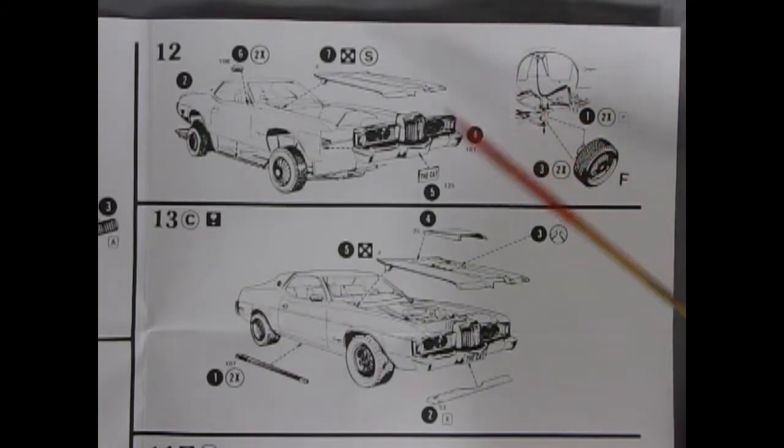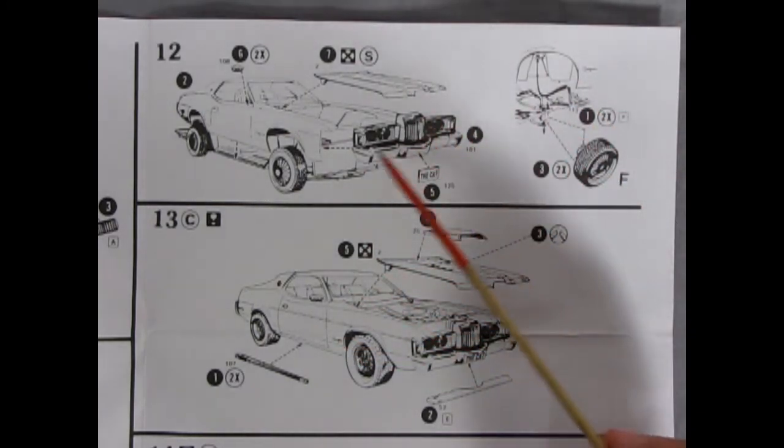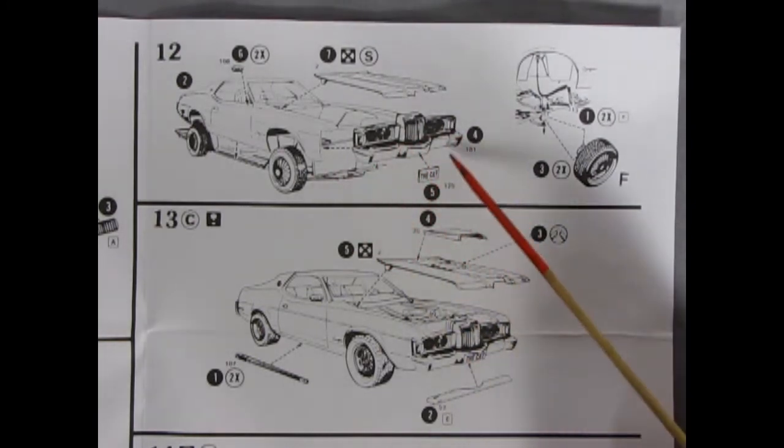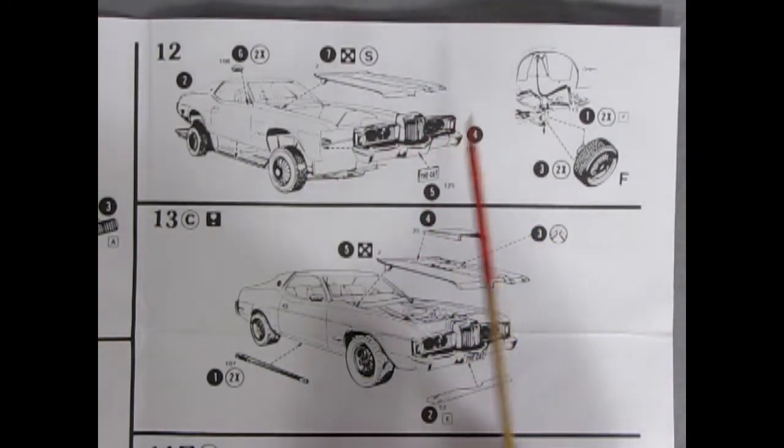Panels 12 and 13 can be shown together as one is a stock build and the other is a custom however they do share steps in between. As you can see we've got our grille gluing onto the front of the body with the cat license plate gluing onto the bumper,